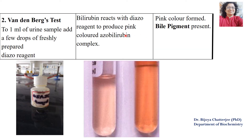The second test is Van den Berg's test. We take 1 ml of urine and add a few drops of diazo reagent. Bilirubin reacts with the diazo reagent to produce a pink coloured azo-bilirubin complex. The formation of a pink colour indicates the presence of bile pigments in the urine sample.